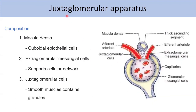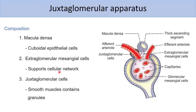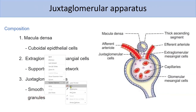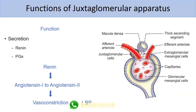Next is the juxtaglomerular apparatus. It has three components. First, the macula densa, an area where cuboidal epithelial cells are present. Second, extra-glomerular mesangial cells, which support a cellular network. Third, juxtaglomerular cells found in the afferent arterioles, which contain smooth muscles with granules.